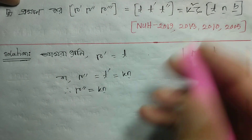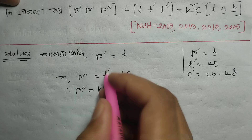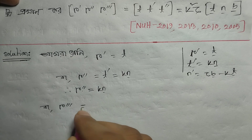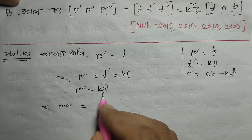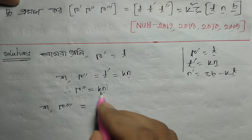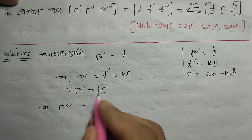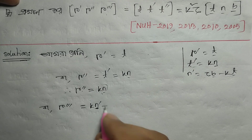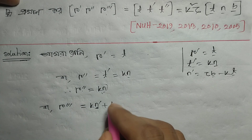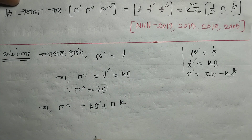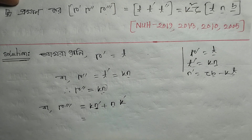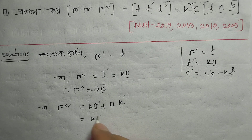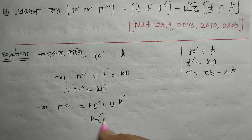Now for R triple prime, we differentiate R double prime. R double prime differentiated gives R triple prime. Applying the product rule, we differentiate kappa times N: kappa differentiated gives kappa prime times N, plus kappa times N prime. And N prime equals tau*B minus kappa*T.